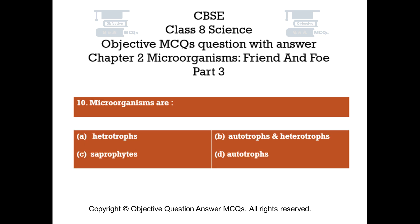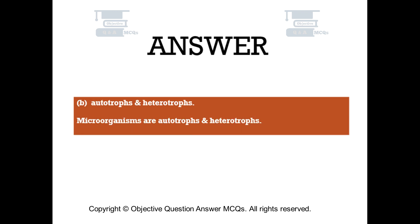Question number 10. Microorganisms are. Option A: Heterotrophs. Option B: Autotrophs and heterotrophs. Option C: Saprophytes. Option D: Autotrophs. The right answer is option B — Autotrophs and heterotrophs. Microorganisms are autotrophs and heterotrophs.